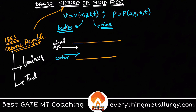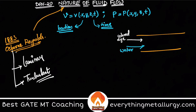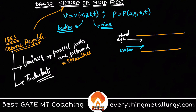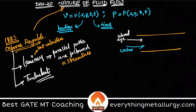Laminar flow is basically when the same parallel paths are followed, which we usually call streamlines. This usually happens at low velocities of the fluids. At low velocities, you can see that the colored dye is following the same parallel path as the water.